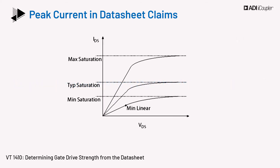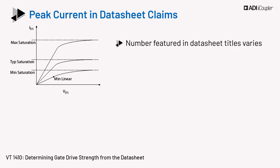This image shows the typical IV characteristics of the MOSFET. Different curves show the variation of the IV characteristics across different processes and temperature. The number featured in a data sheet's title also varies and could be the min, typical, or max saturation current that a part can deliver. It does not necessarily imply that the part delivers the rated current as a minimum current in the linear mode of operation.